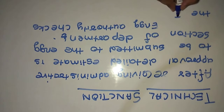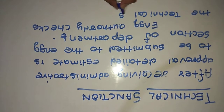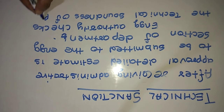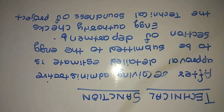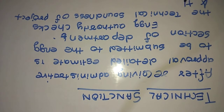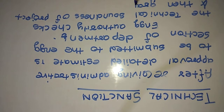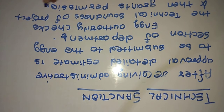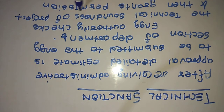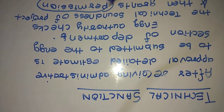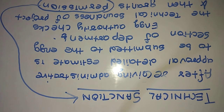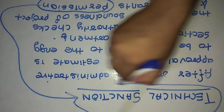The engineering authority checks the technical soundness of the project and then grants permission. This permission is known as technical sanction.